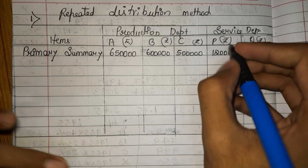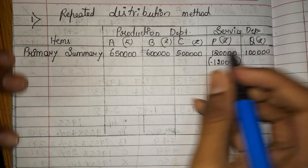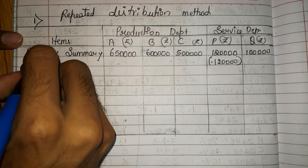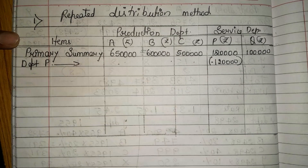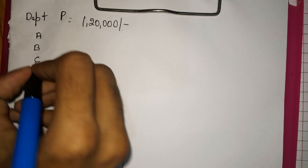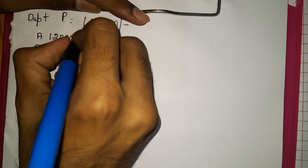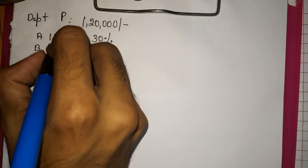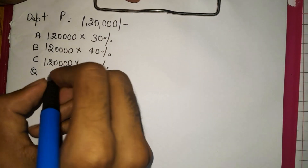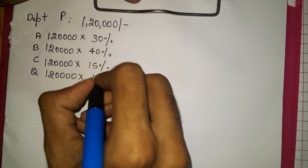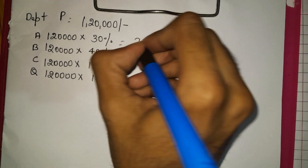First, we need to apportion department P. So we minus 1,20,000 from P and distribute it among A, B, C, and Q departments. The total amount available for apportionment is 1,20,000. Now distributing department P's cost: 1,20,000 into 30% will be 36,000 for A department.